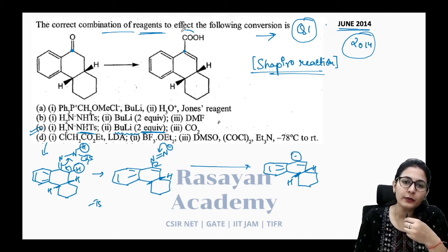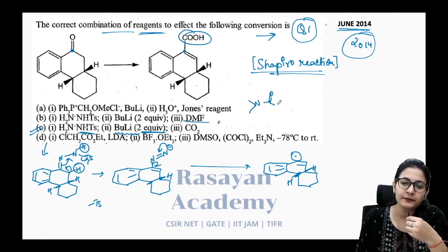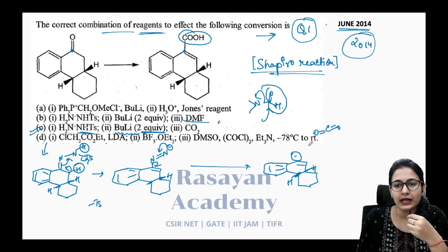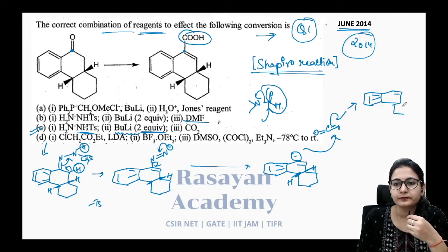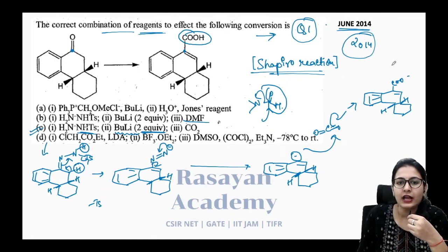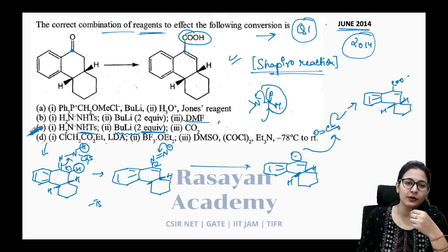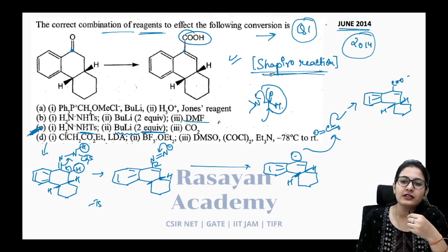To form the carboxylic acid, DMF is not needed because DMF only transfers a formyl group, not the acid, and there is no oxidizing agent. So the vinyl anion directly attacks carbon dioxide to give the carboxylate (COO⁻), which on hydrolysis gives the final product. The correct set of reagents is option C, based on the Shapiro reaction.